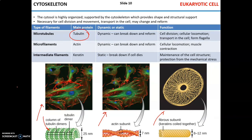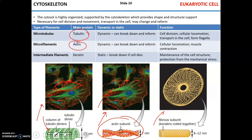Microfilaments, shown in red on micrographs, are formed by the protein actin. They are also dynamic structures, just like microtubules — they can break down and reform. Microfilaments actively participate in cellular movement and locomotion. Actin is also indispensable for the process of muscle contraction, which is itself a form of locomotion.